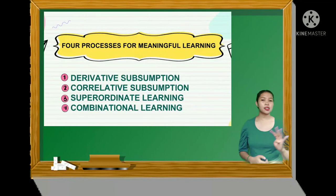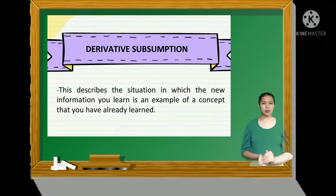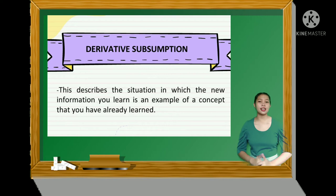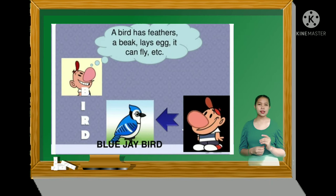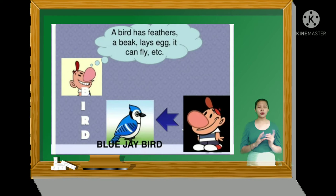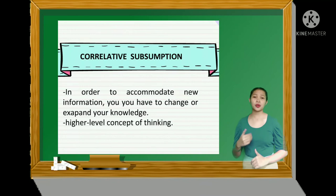Meaningful learning can take place through four processes. Number one is derivative subsumption. This describes the situation in which new information you learn is an example of a concept you have already learned. For example, as you can see in the picture, your concept of birds is that they have feathers, a beak, lay eggs, and can fly. Now you've seen a blue jay — a new kind of bird that confirms your concept of bird. Your new knowledge about the blue jay is attached to your concept of bird without altering that concept. This is an example of derivative subsumption.